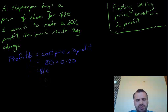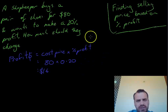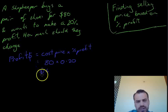Stop there for a minute, think about it. You're a shopkeeper, you bought a pair of shoes for $80. Now if you want a 20% profit, you're going to need to make $16.